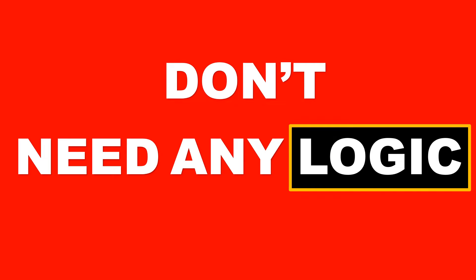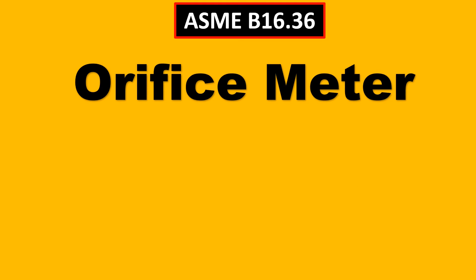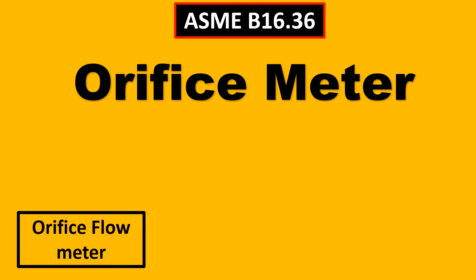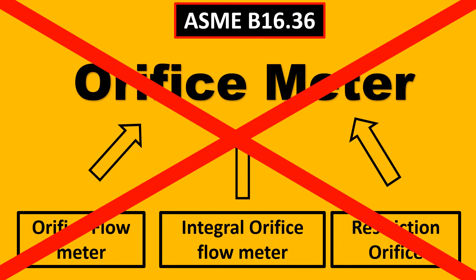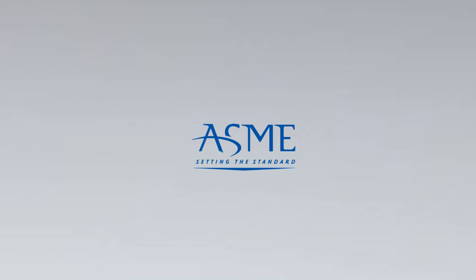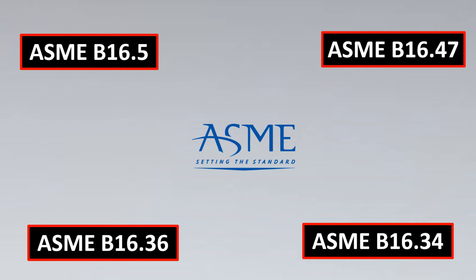People say that for flange standards you don't require any logic — let's put that to the test. For example, we have ASME B16.36 which is usually used for orifice meters. Would you use the same standard for an integral orifice and a restriction orifice? The answer is a big no. The ASME standard is divided into four flange standards: 16.5, 16.47, 16.36, and 16.34. The basic and most simple two standards are 16.5 and 16.47, then we get to the complex ones like 16.36 and 16.34.